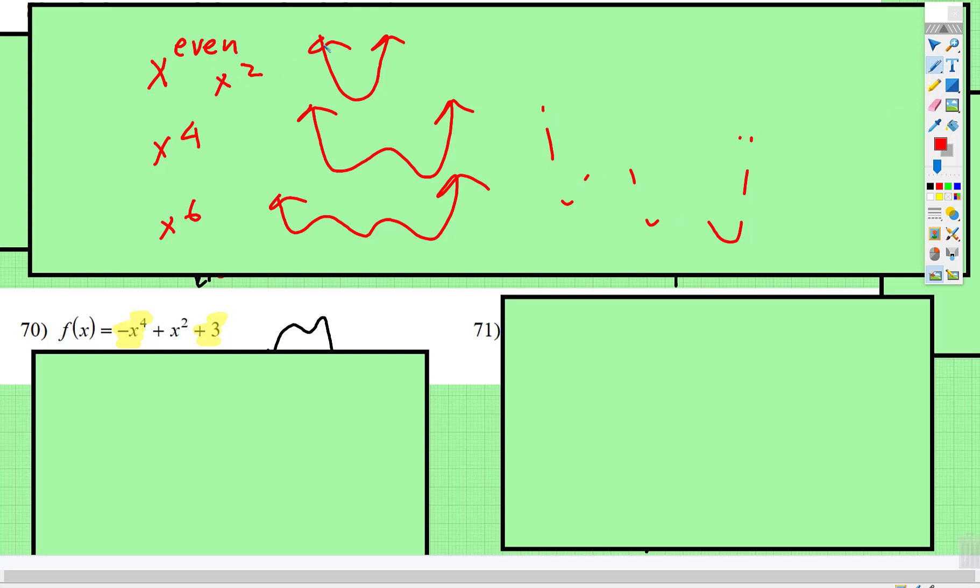So x to the evens, the endpoints will be facing the same direction. If it's a negative x to the even, endpoints will be facing in the same direction, but the negative direction.